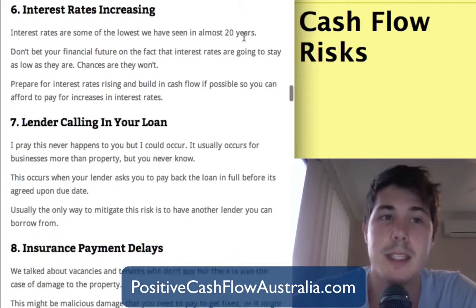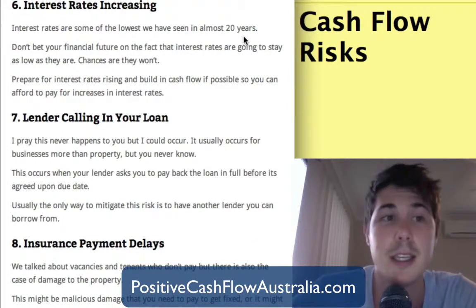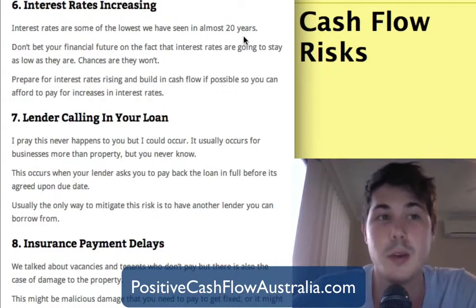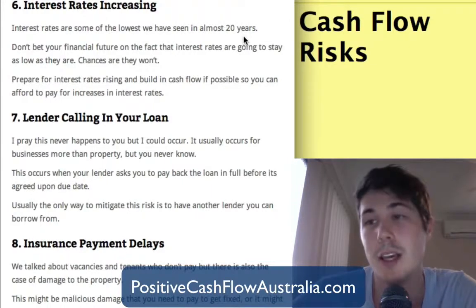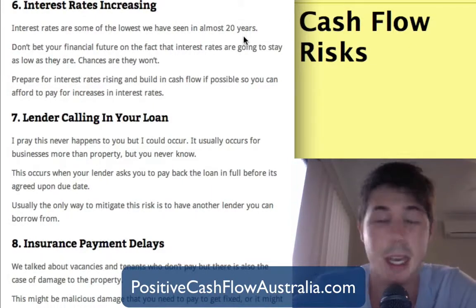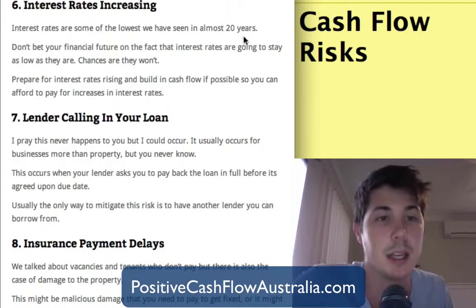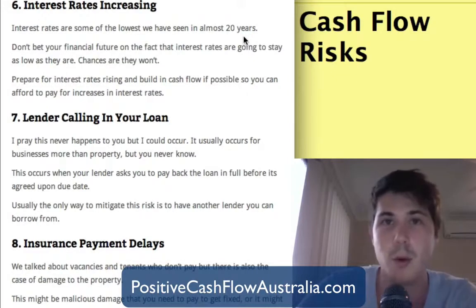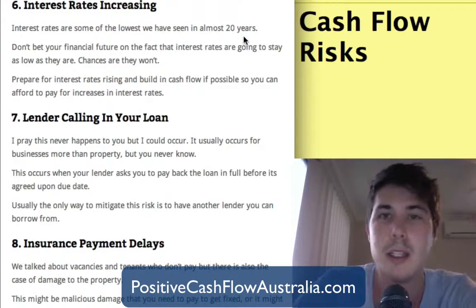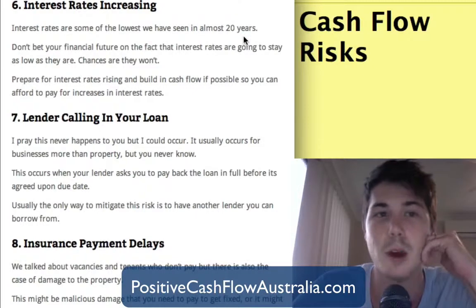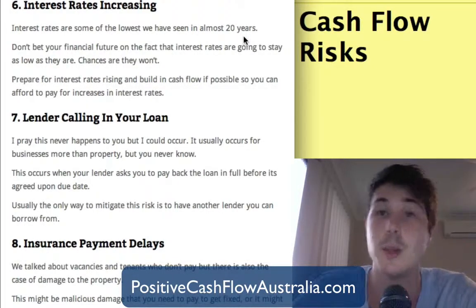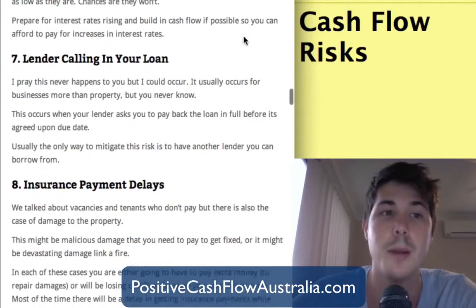Cash flow risk number six is interest rates increasing. Interest rates are some of the lowest we've seen in 20 years. Some people say they're going to go down again, some say they're going to go up — it depends on exports and other factors. It is good to prepare for interest rates rising and build that into your cash flow predictions so you can afford it if interest rates do go up.